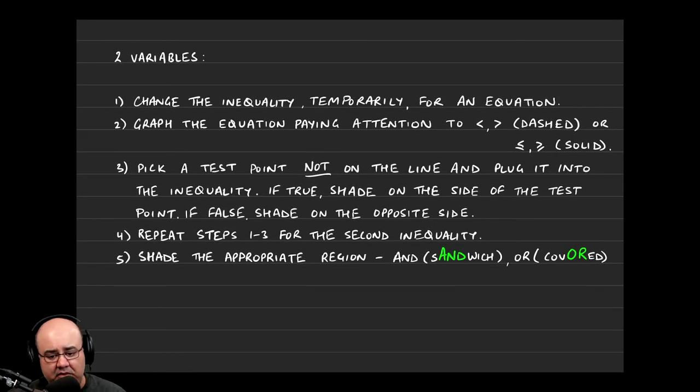Let's just talk about the instructions in this video, and then we'll do the example in the next one. So for two variables, we have a different set of instructions to follow. The first thing you want to do is change the inequality temporarily, just for a brief moment, for an equation.